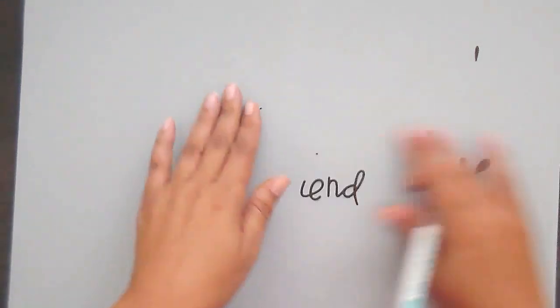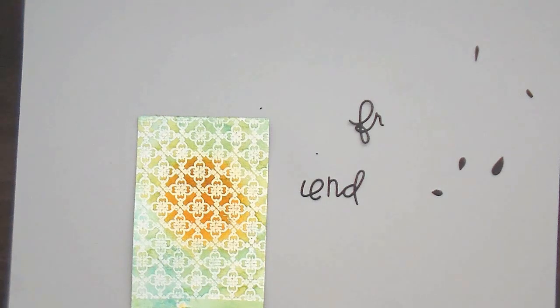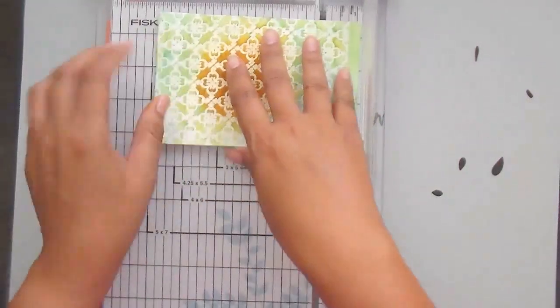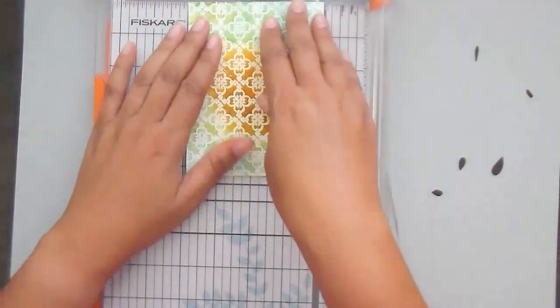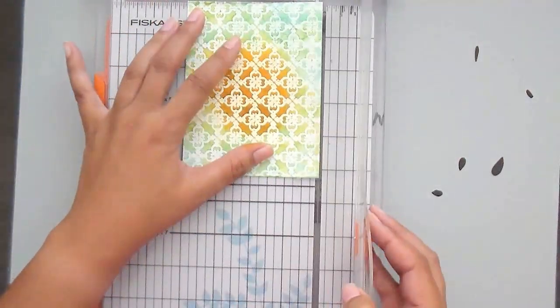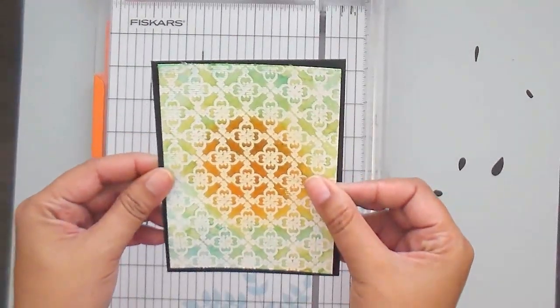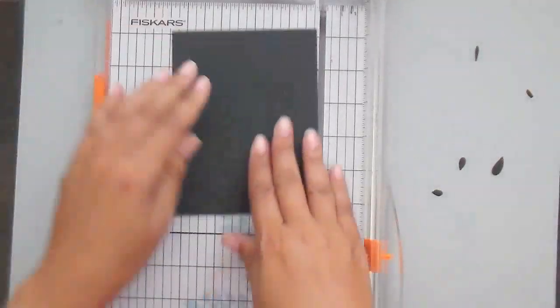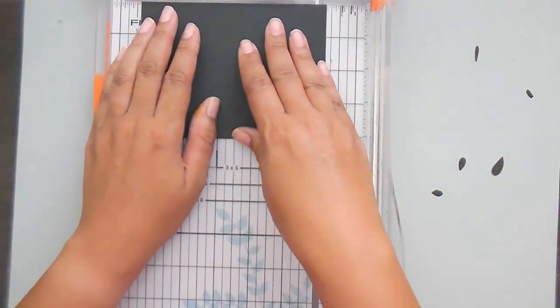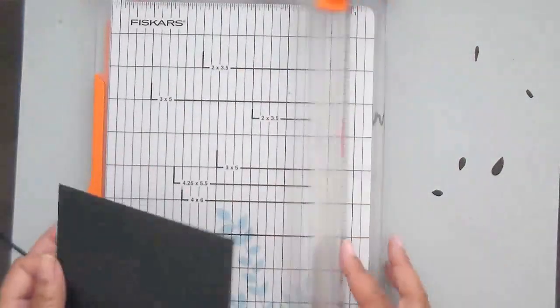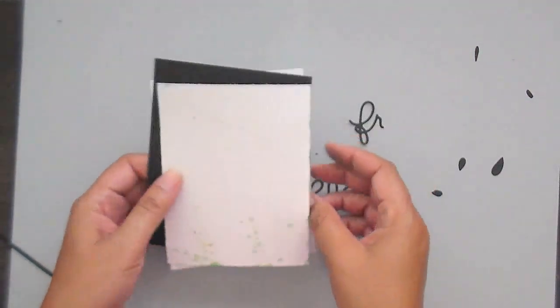All right. Now let's start assembling the card. So what I want to do is actually cut this panel down just a tad bit because I want to go ahead and mat it on black. So I'm just going to take just a smidgen off the bottom. I think I'm going to be okay - I don't think I'm going to need to cut the side. And look how nice that looks on the black. So we're going to trim down the black just a little bit because we're actually going to mount the panel onto a white card base, because I always make white card bases for my cards. It's easier to write your sentiment on the inside.